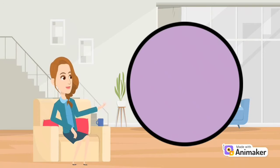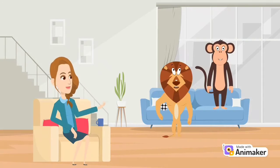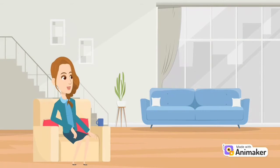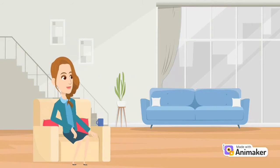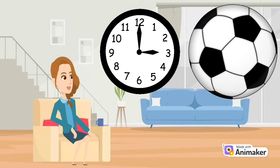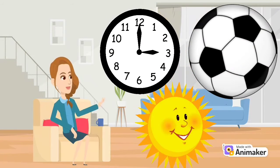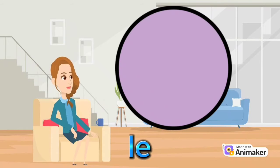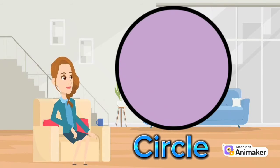Do you know what shape is this? It's a circle. Correct. Can you give me the name of things that are similar to a circle? Clock. Ball. Sun. Excellent. A circle is a round-shaped figure that has no corners or edges.